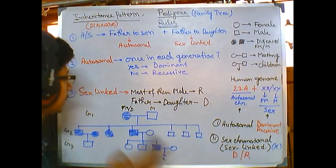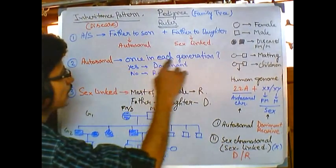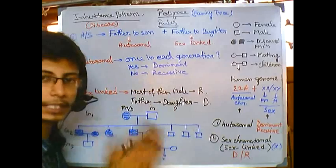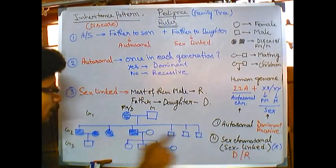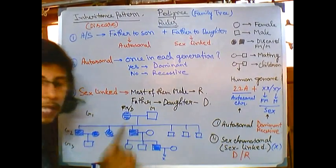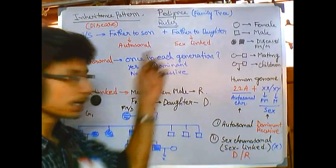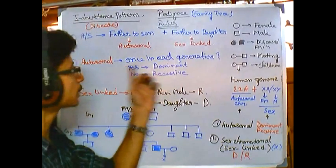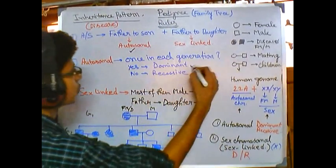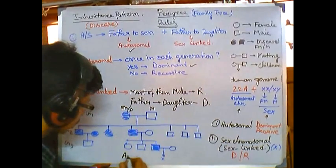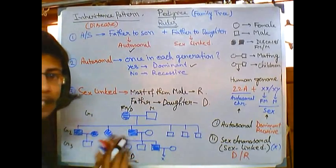Once we confirm it is autosomal, we need to determine whether it is dominant or recessive. Using the autosomal formula: is the disease present in each generation? In G1 yes, in G2 yes, in G3 yes — it is present in every generation. When a trait appears in all generations, it indicates autosomal dominant inheritance. Therefore, the disease trait here is autosomal dominant.